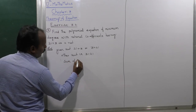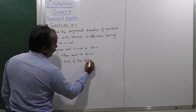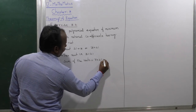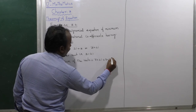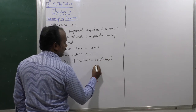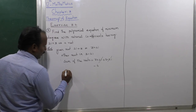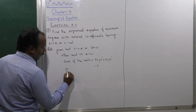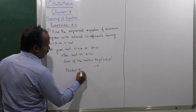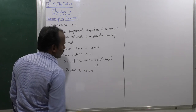Sum of the roots equals (3 plus 2i) plus (3 minus 2i). The 2i terms cancel, giving sum of roots equal to 6.